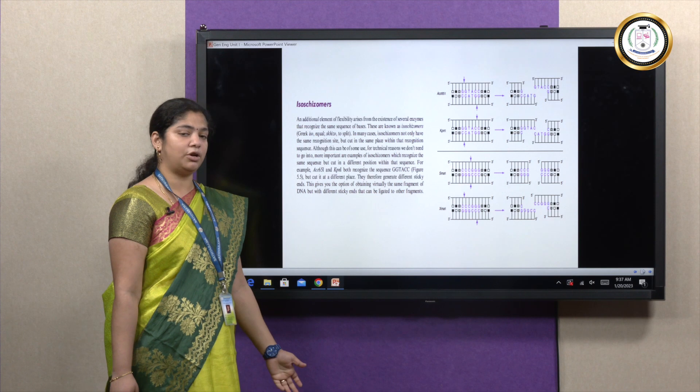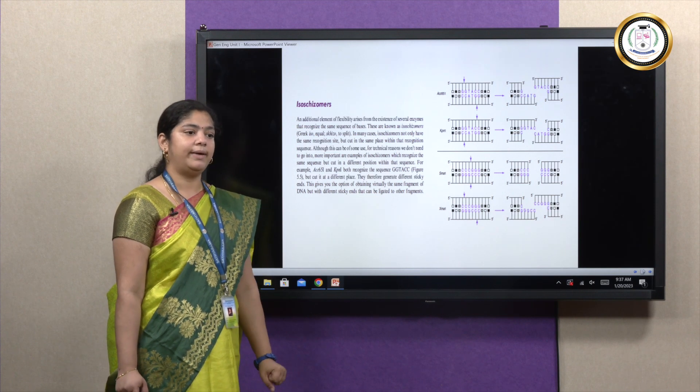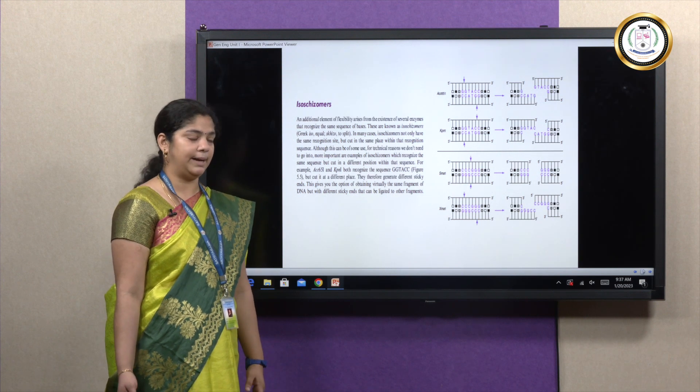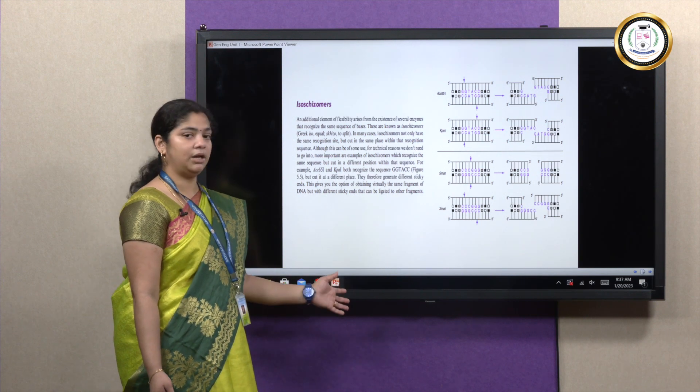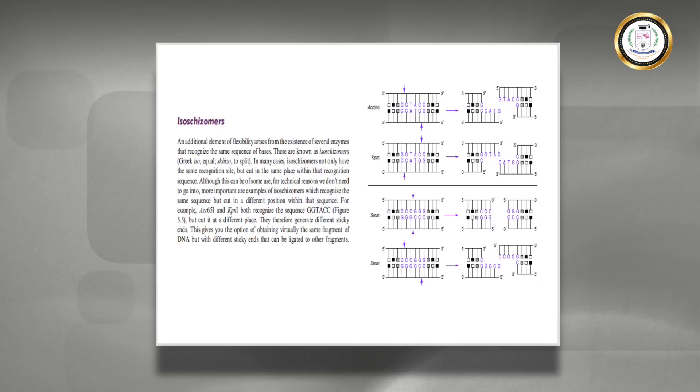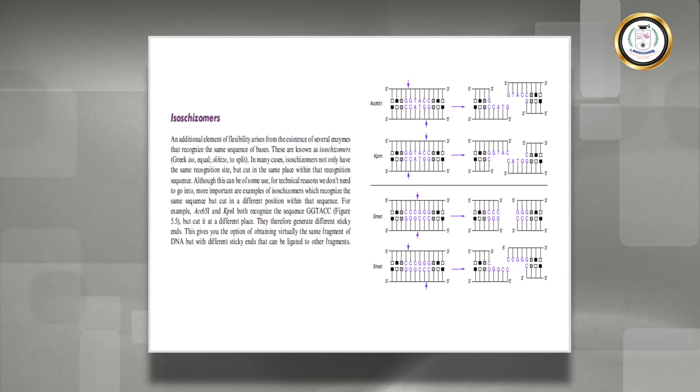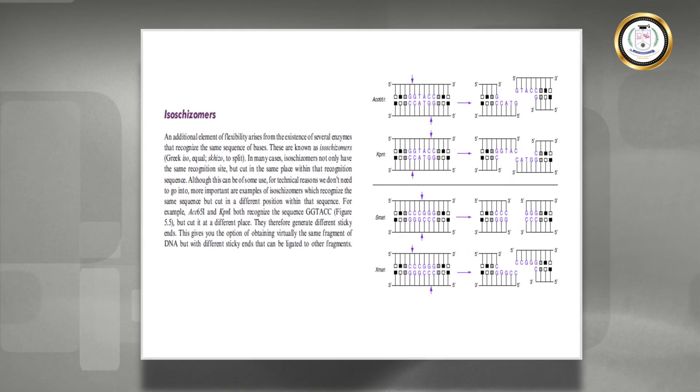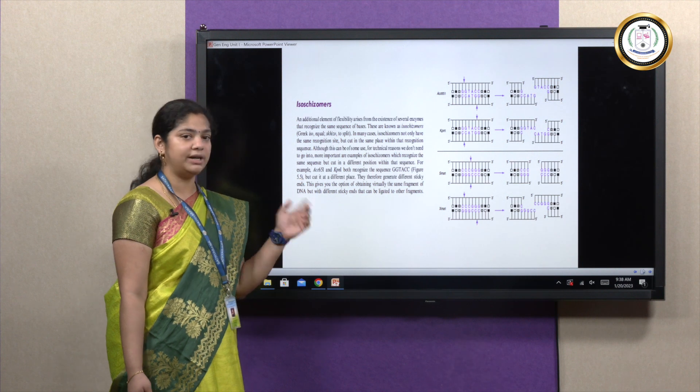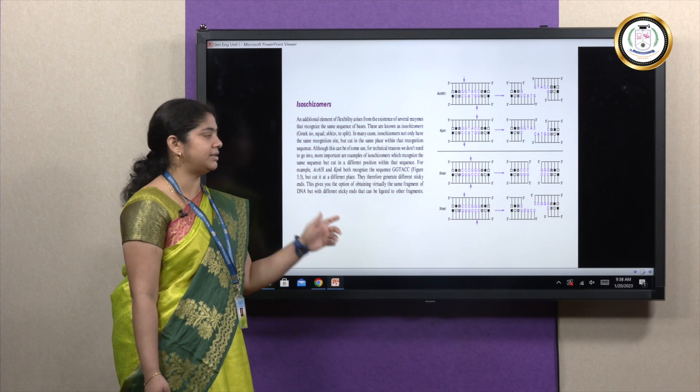Another type is called isoschizomers where a particular gene sequence is being targeted by two other restriction enzymes, but the difference is in the type of cutting. Here you can see an example where Acc65I and KpnI cut the same recognition sequence whereas they cut at different sites of the same DNA sequence.